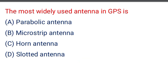Next question: the most widely used antenna in GPS is — option A: parabolic antenna, option B: microstrip antenna, option C: omni antenna, option D: slotted antenna. The correct answer is option B: microstrip antenna.